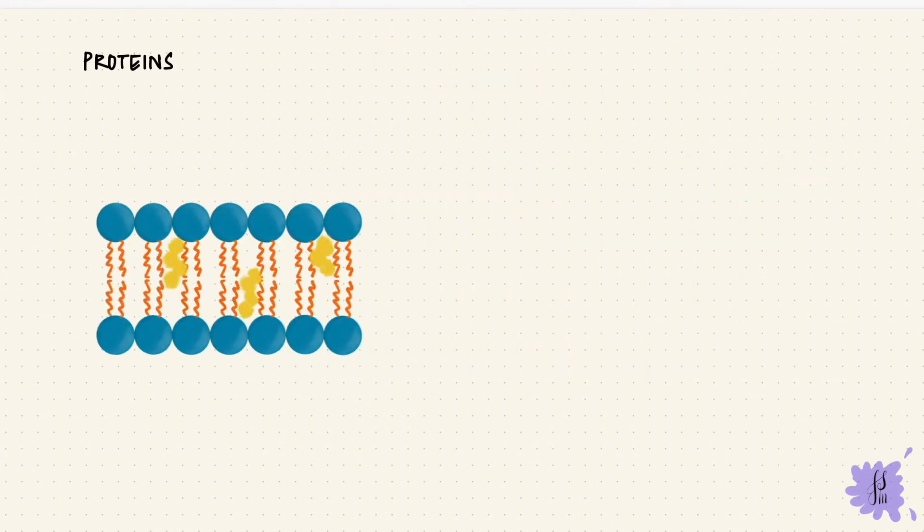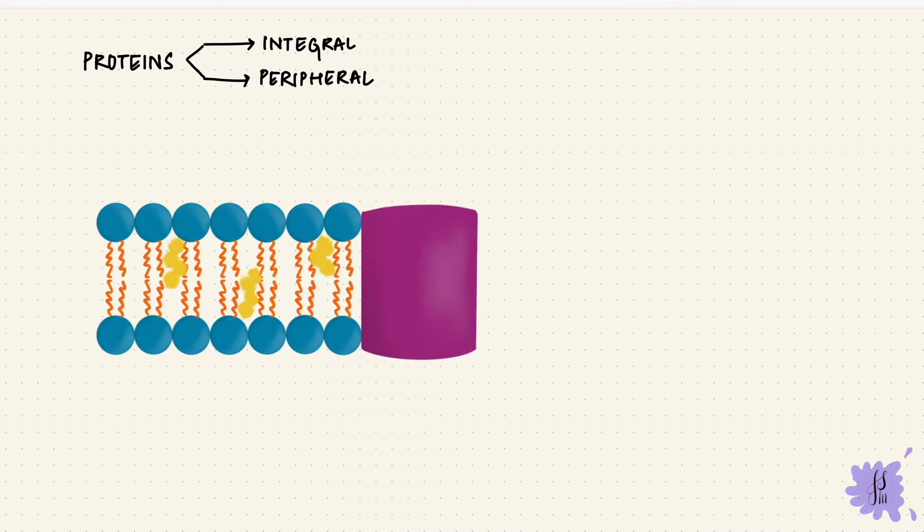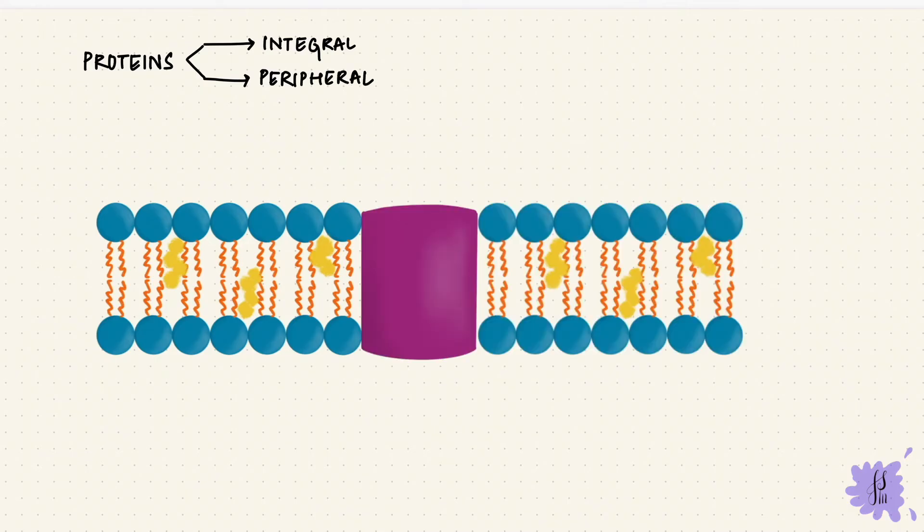Proteins in the cell membrane can be of two types: integral and peripheral. Integral proteins are embedded in the cell membrane. They could be just on one side or they could span the whole membrane. That's a transmembrane protein, which goes from one side to the other.